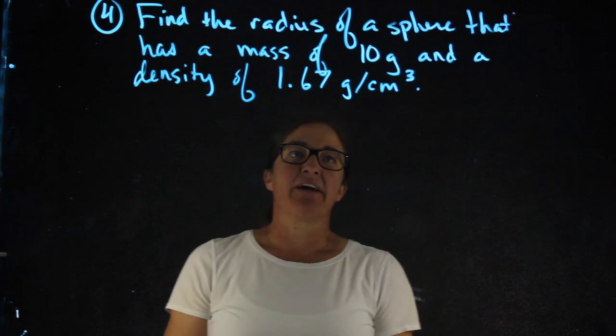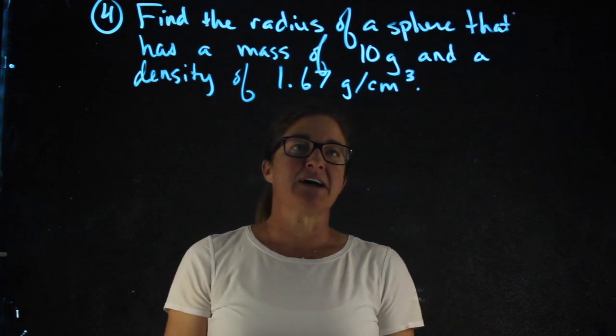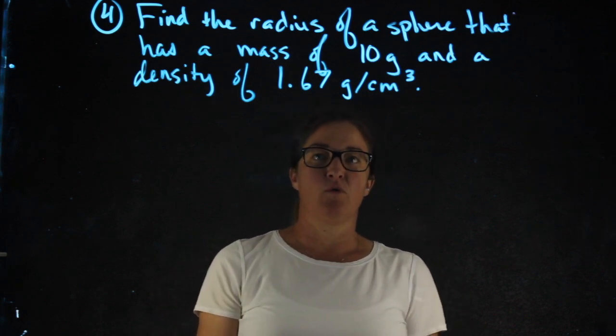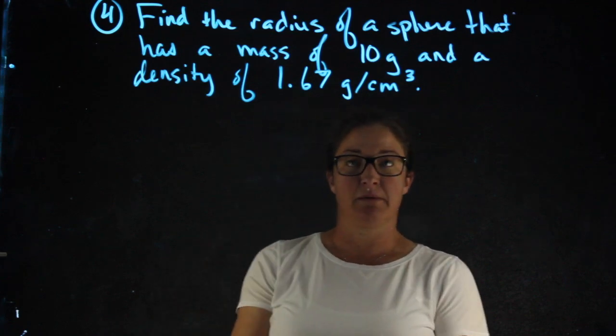Number four asks me to find the radius of a sphere that has a mass of 10 grams and a density of 1.67 grams per centimeter cubed.